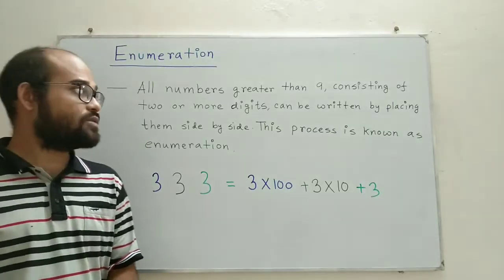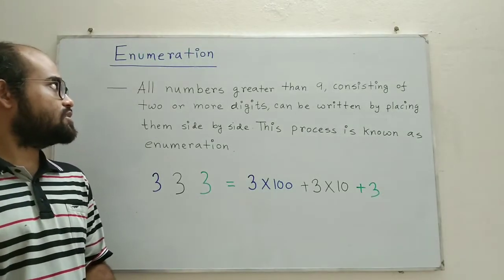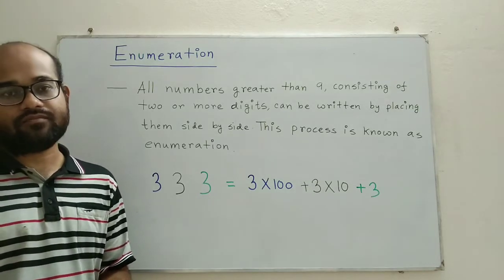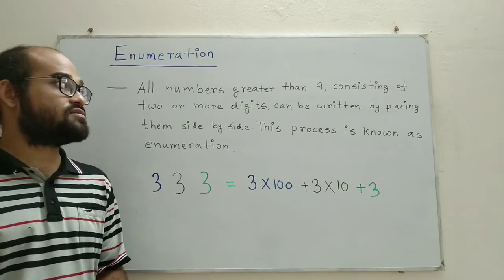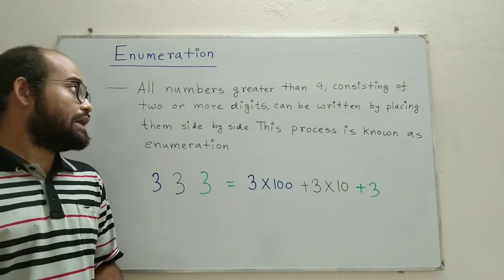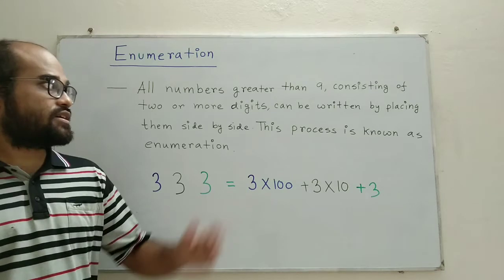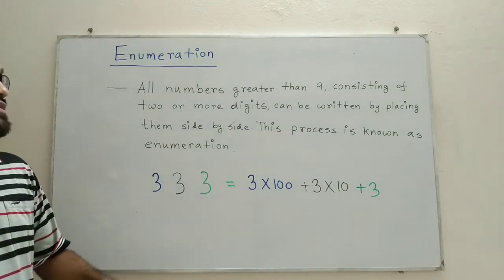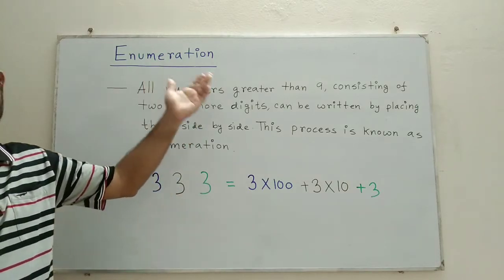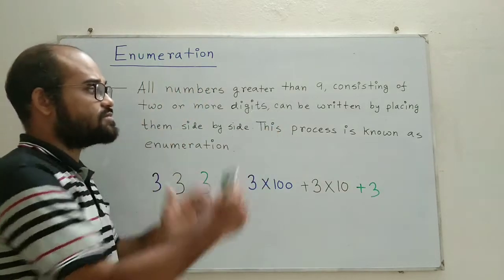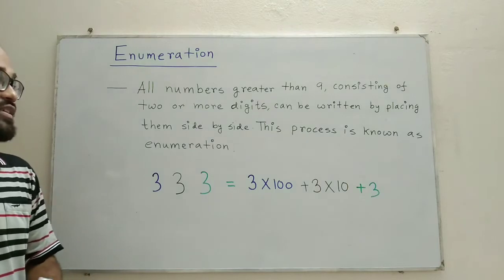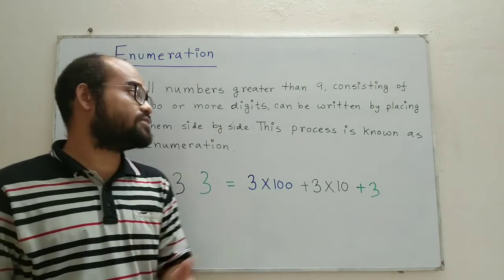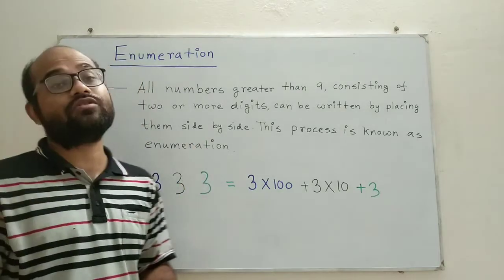Hello everybody, welcome back after the brief interlude. If we want to express a number greater than 9, we need at least 2 digits. Any number consisting of 2 or more digits is expressed using the basic 10 digits, but by placing them side by side. This process of placing digits side by side and using them to express numbers is known as enumeration.